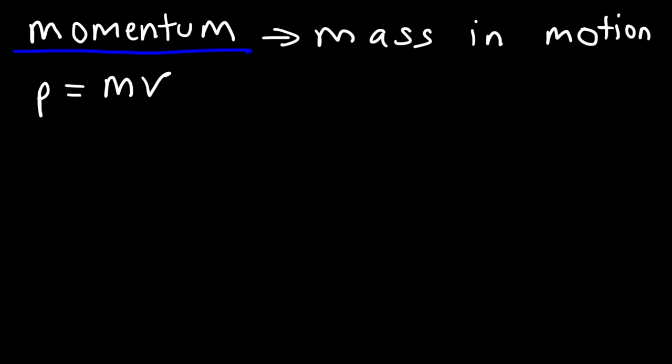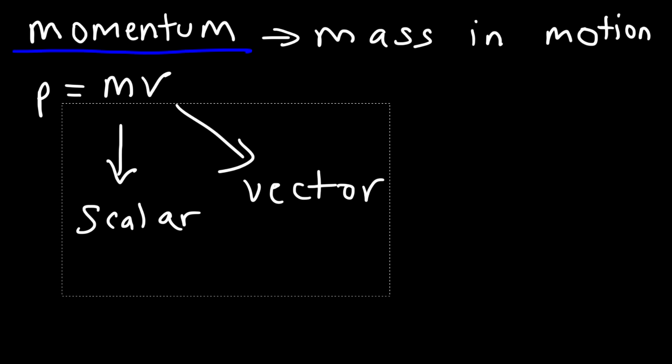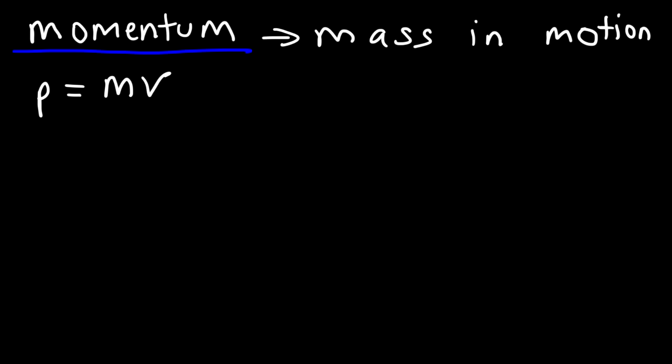Is momentum a scalar quantity or a vector quantity? Mass is a scalar quantity, and velocity is a vector quantity. Vectors have both magnitude and direction — there's no direction with mass. When we multiply a scalar by a vector, we get another vector. That vector could be greater or smaller in magnitude, but it will still be a vector. So momentum is a vector — it has both magnitude and direction.